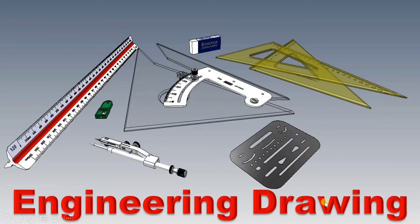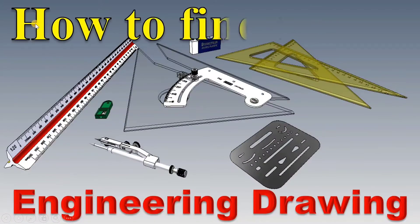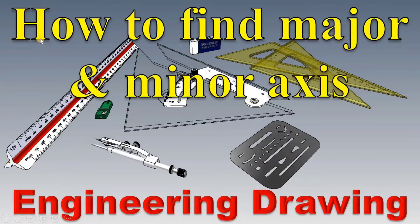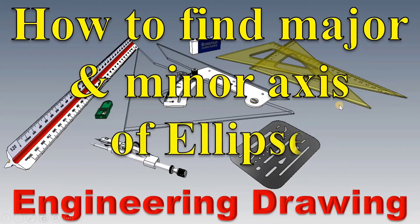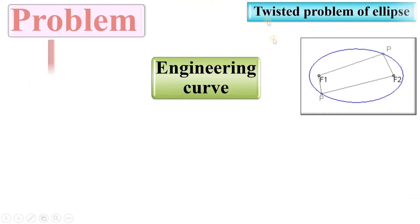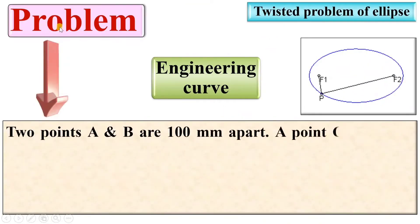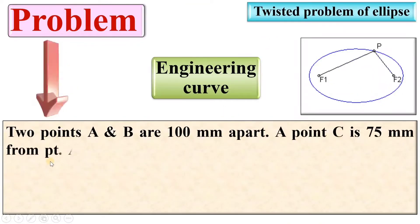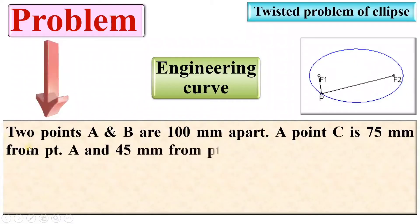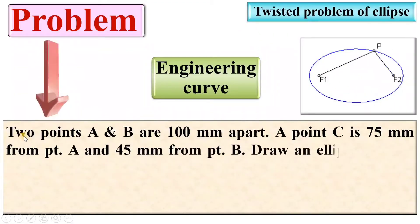Welcome to my engineering drawing playlist. Today I am going to explain how to find the major and minor axis of an ellipse. This is actually a twisted problem of ellipse, so let's see the description of the problem.